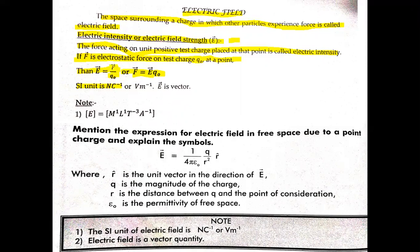Force in the numerator, and the unit of force is Newton. Charge in the denominator, and the unit of charge is Coulomb. So the unit works out to Newton per Coulomb, or equivalently volt per meter. That is the unit of electric field strength.